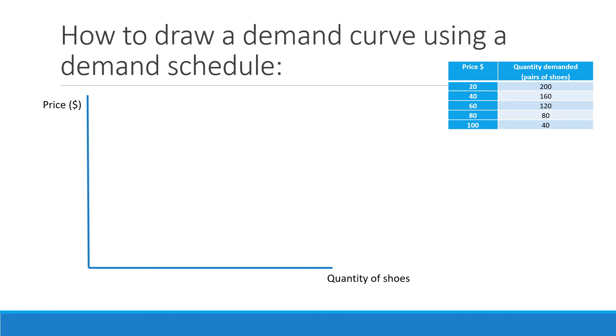The next step is to label those axes. So like I said, price always goes on the y-axis and quantity of shoes always goes on the x-axis.